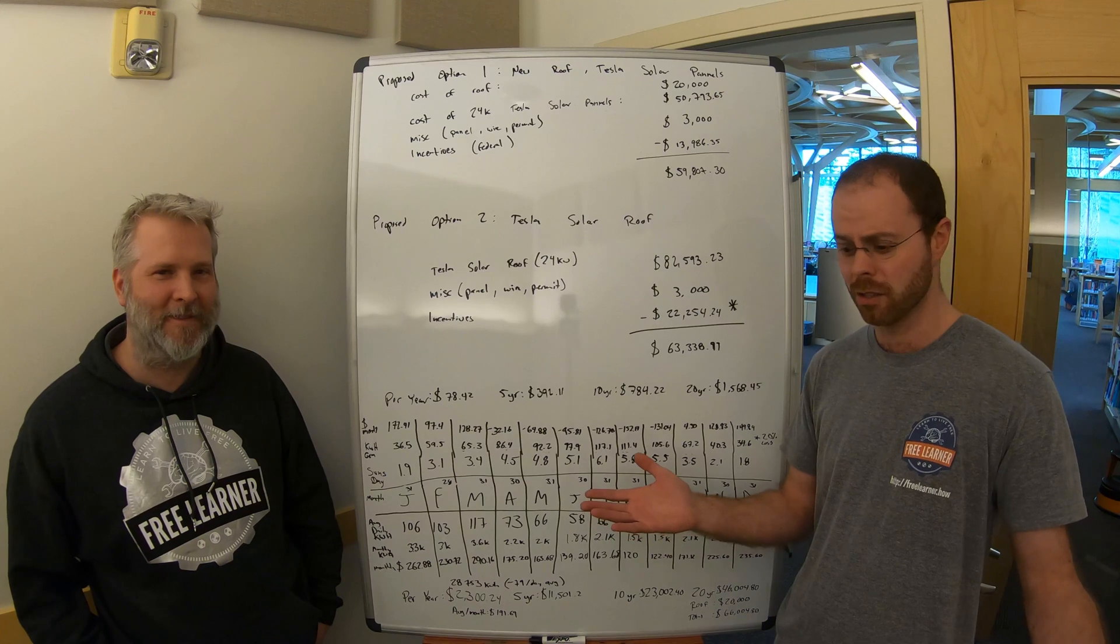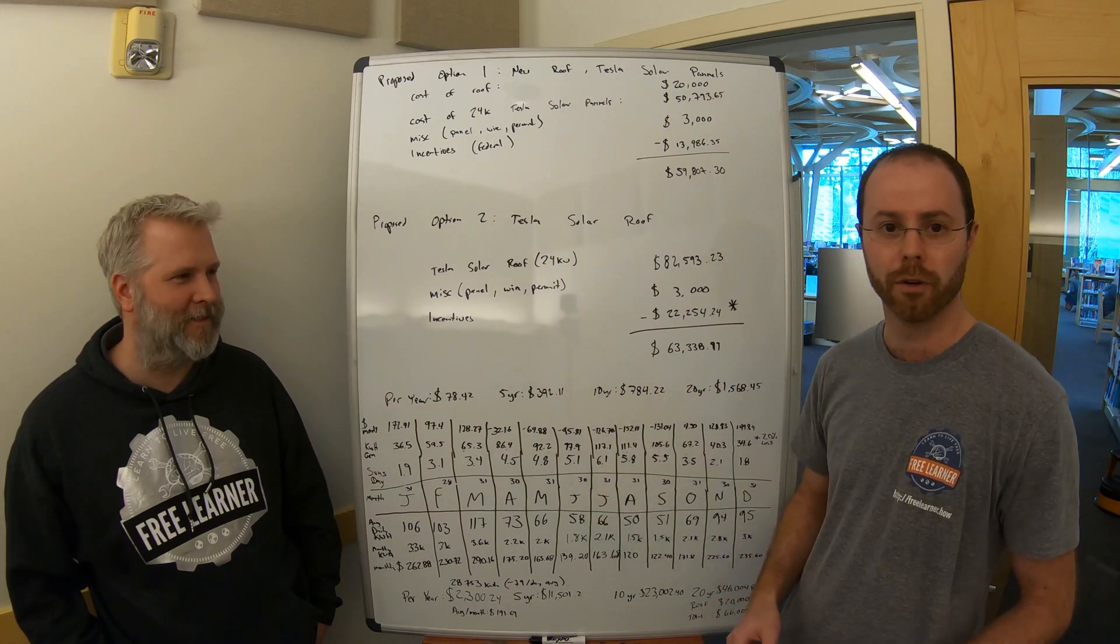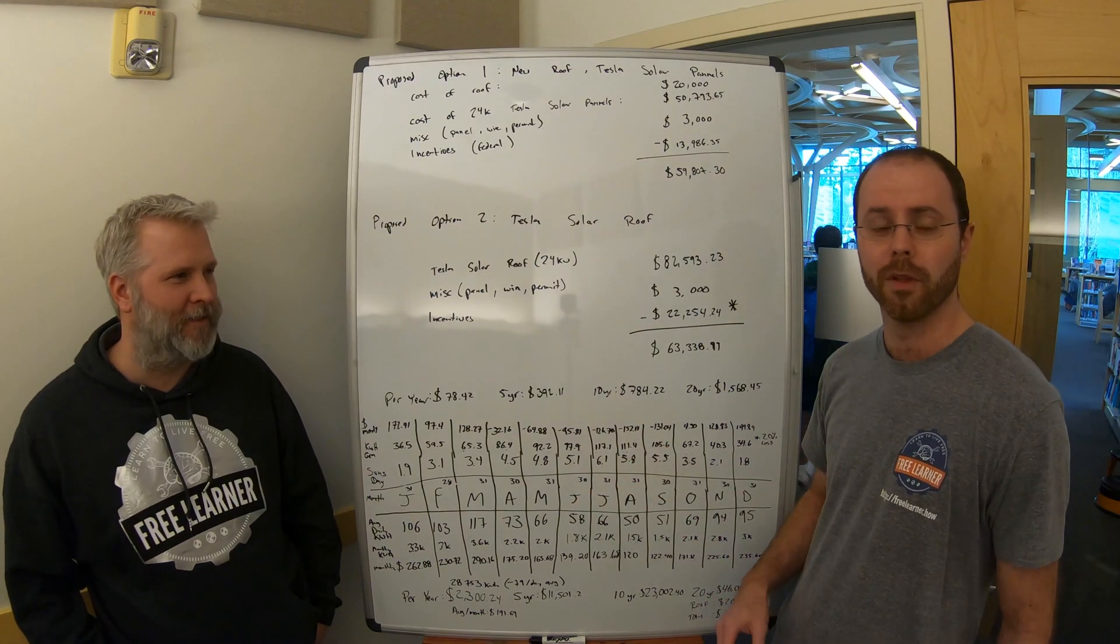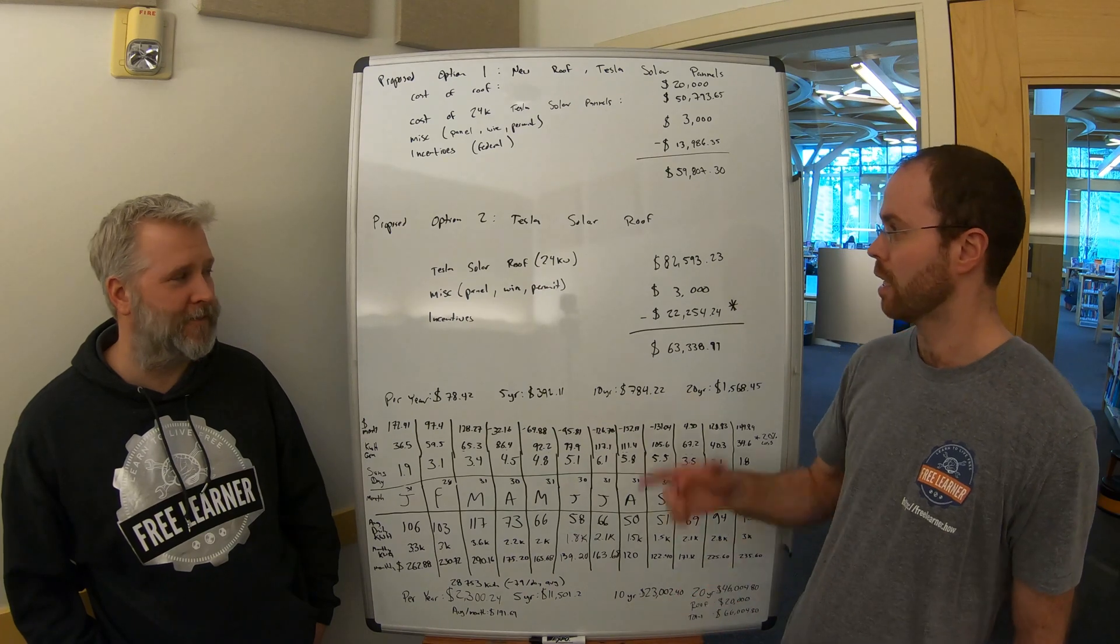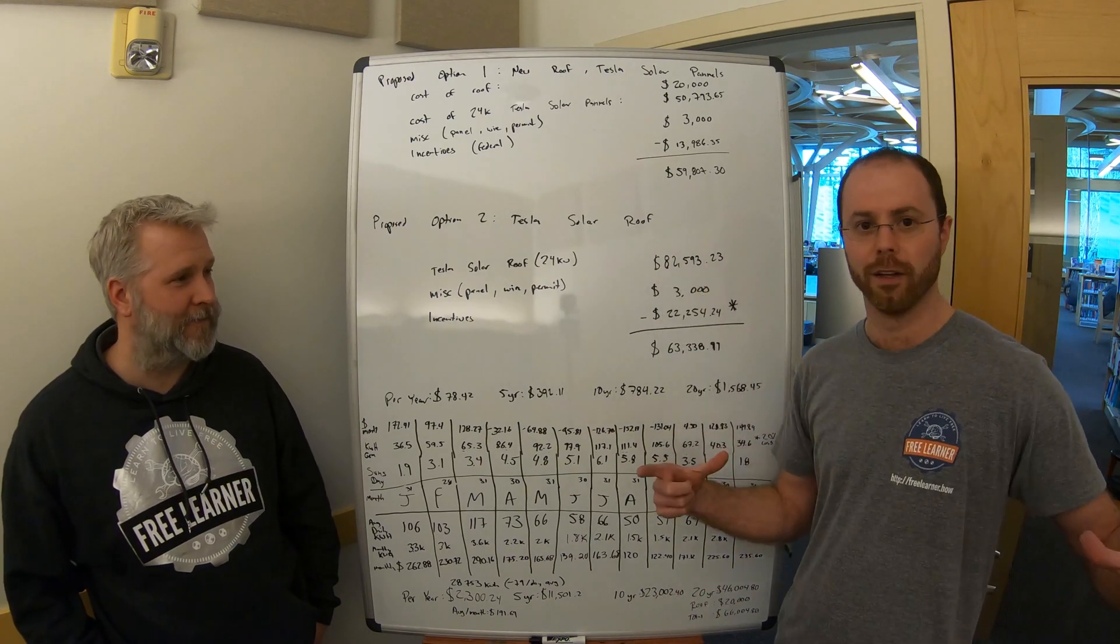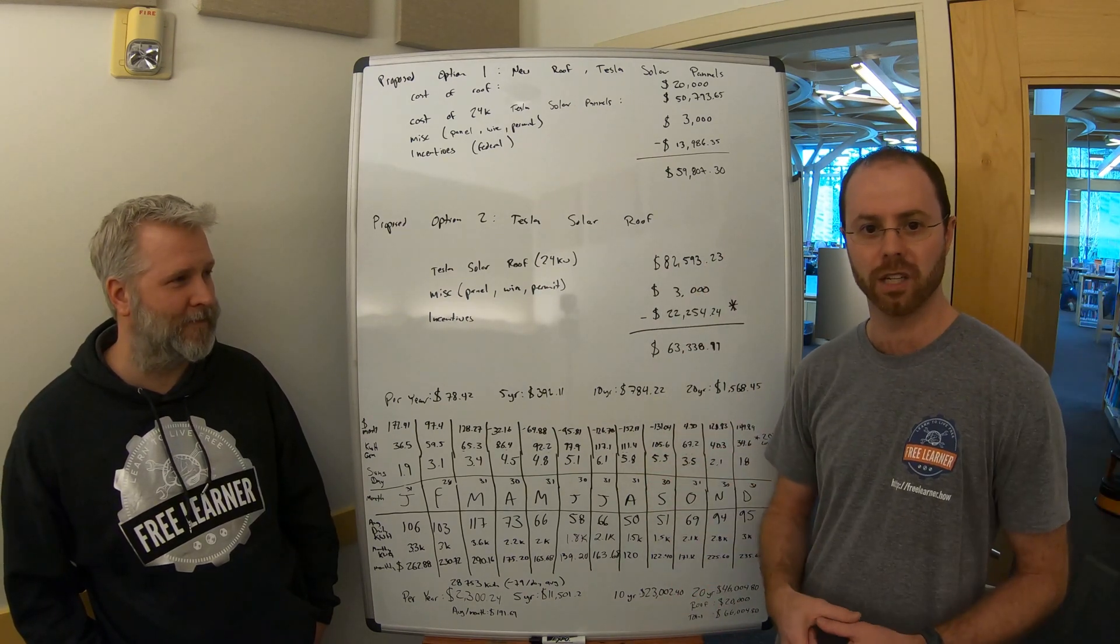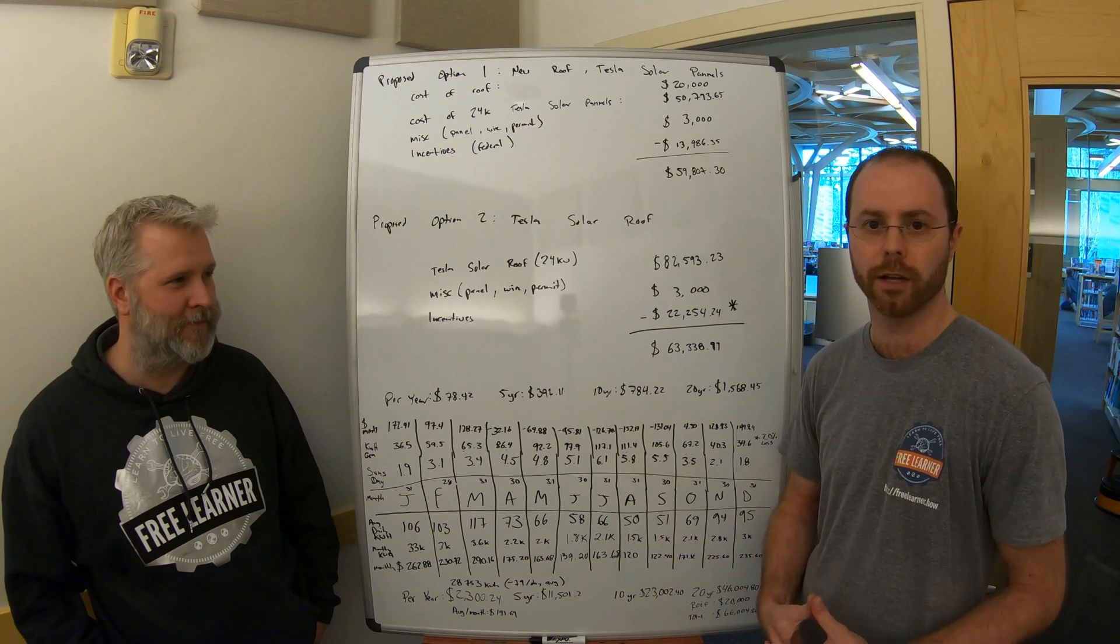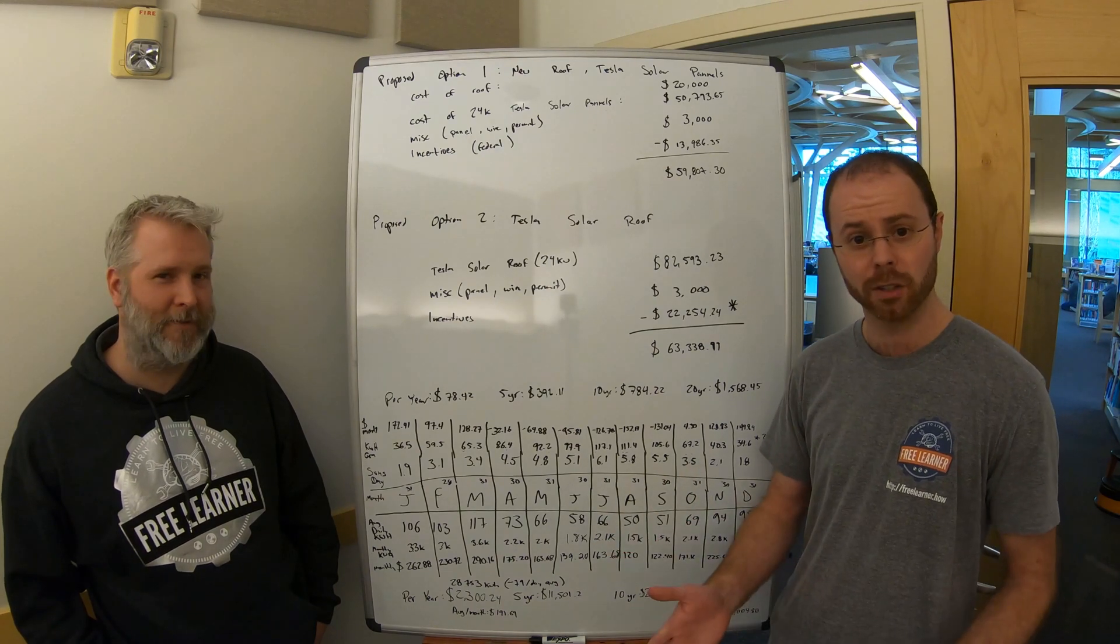They've got one option that says just go do solar panels on your roof, it's the more traditional route. The alternate option is to use Tesla's solar roof, which is tiles that have built-in solar panels in it. It looks a little bit more like roof tiles rather than looking like you've got panels on your roof.